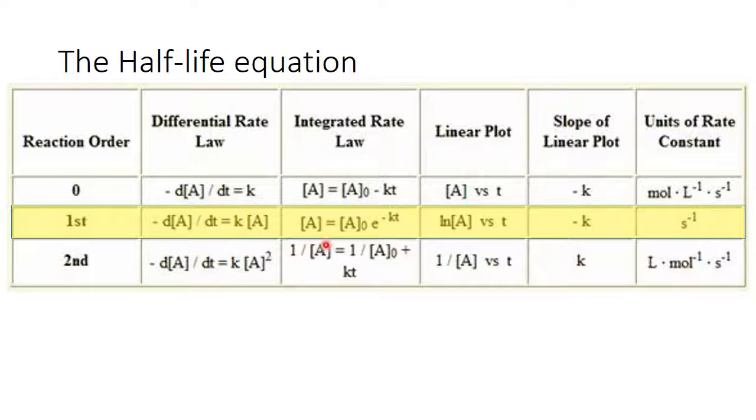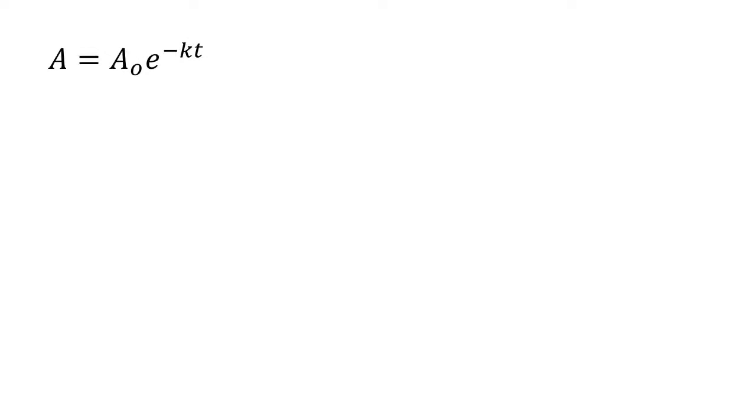With first order, we're going to use the integrated rate law. So the concentration of antibodies at some time is equal to the original amount of those antibodies times e to the negative kt, the rate constant times the time. We're going to go ahead and divide A over to this side to isolate this term. We want to get rid of the e. E's are hard to work with.